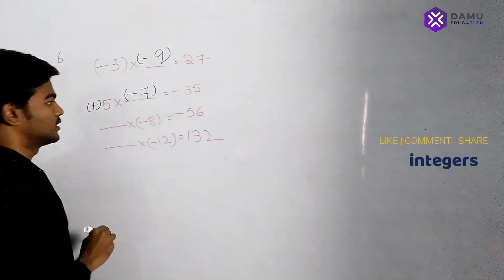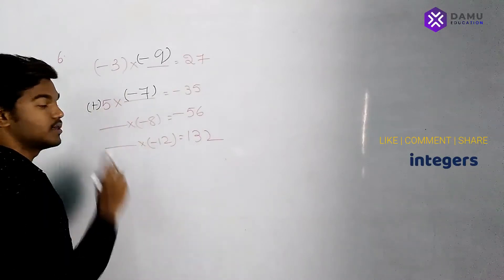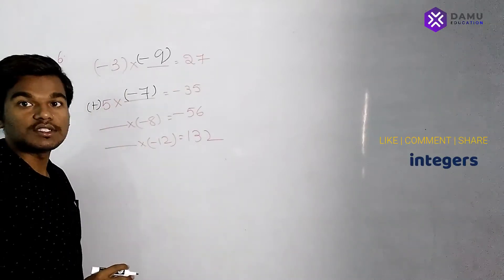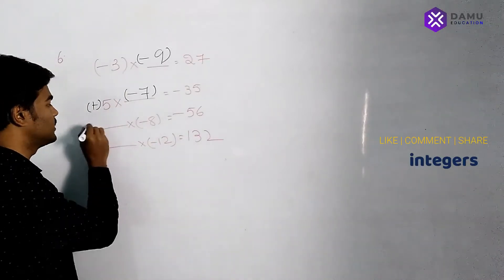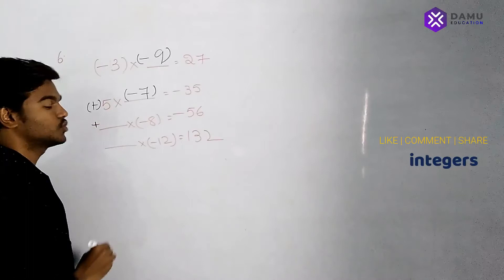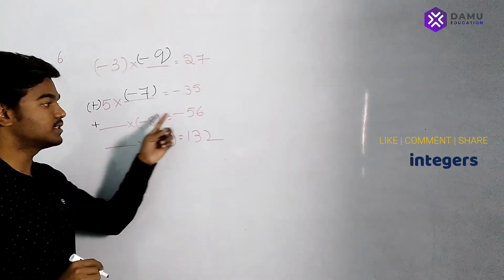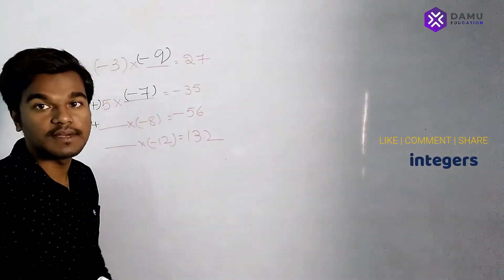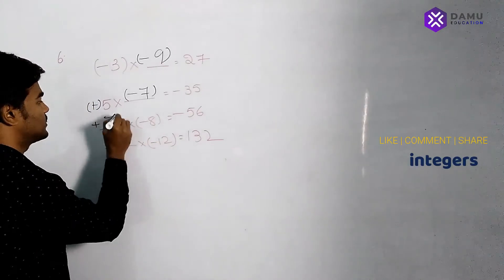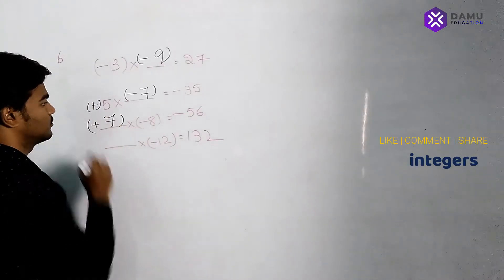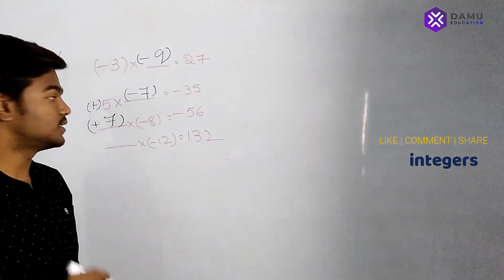Next: blank into minus 8 equals minus 56. Here minus is already on the right side, so the left side should have plus, because plus into minus gives minus. So plus 7: 7 into 8 is 56, giving minus 56.